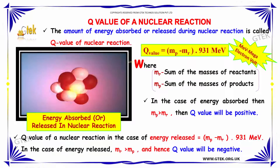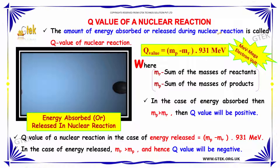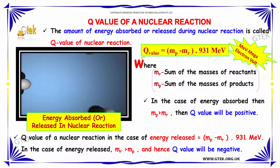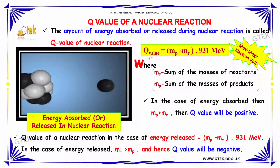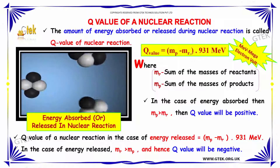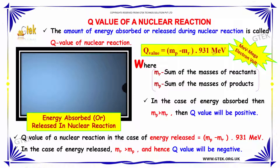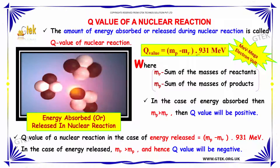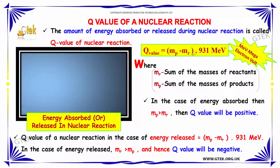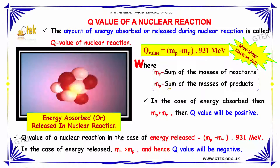The amount of energy absorbed or released during a nuclear reaction is called the Q-value of the nuclear reaction. Q-value can be given as MP minus MR into 931 mega electron volt, where MR is the sum of the masses of reactants and MP is the sum of the mass of products.